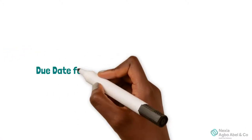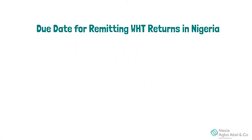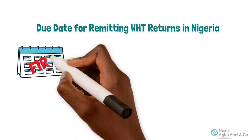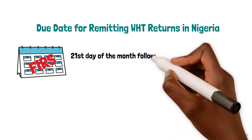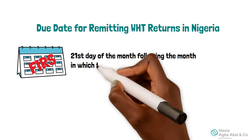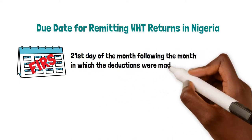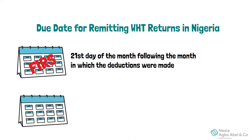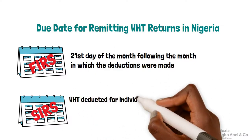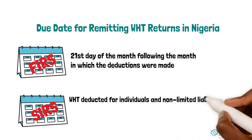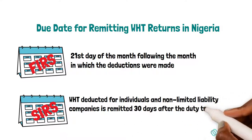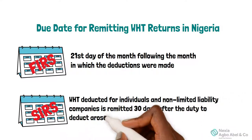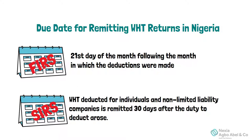Due Date for Remitting Withholding Tax Returns in Nigeria. The due date for remitting Withholding Tax to the FIRS is the 21st day of the month following the month in which the deductions were made. The due date for remitting Withholding Tax deducted from individuals and non-limited liability companies to the relevant State Internal Revenue Services is 30 days after the duty to deduct arose.